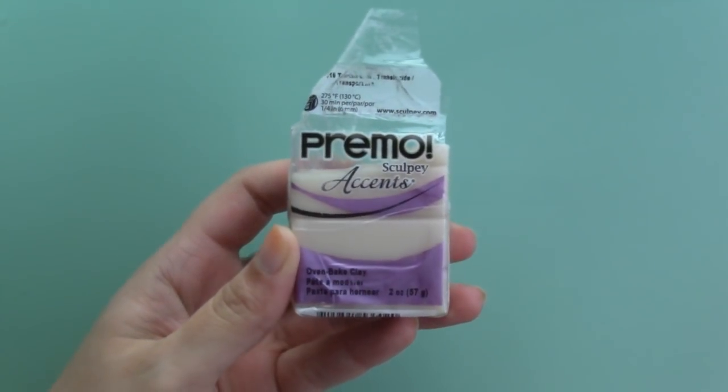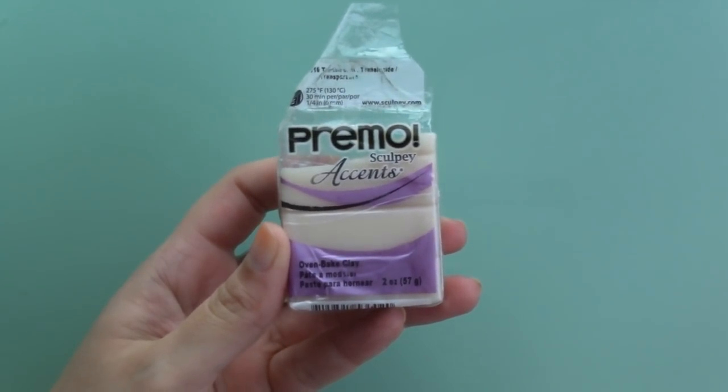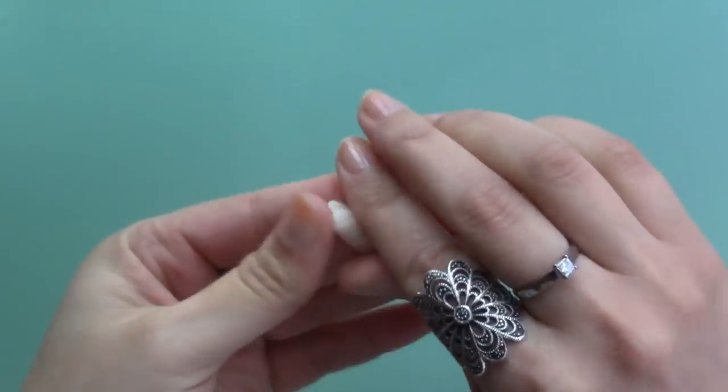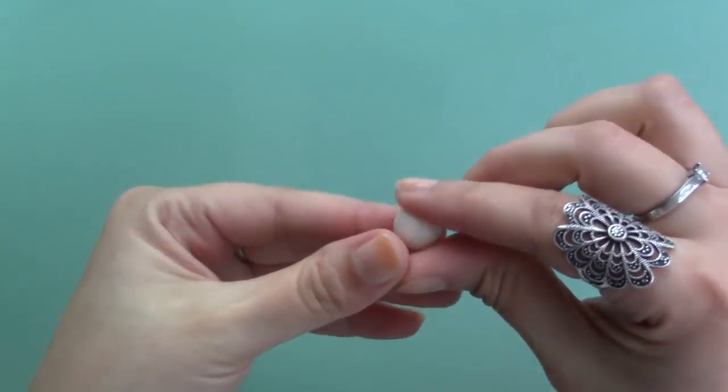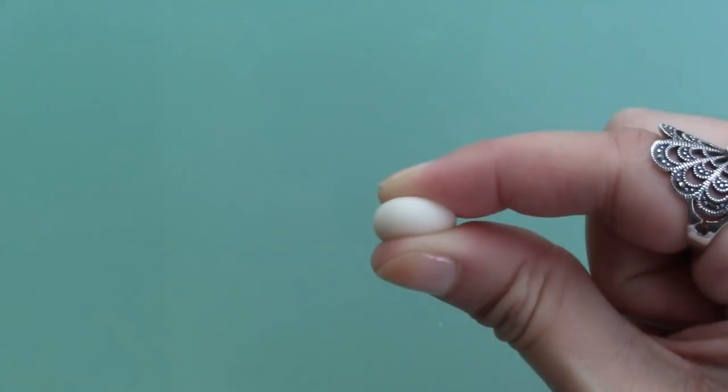To make the octopus I used translucent polymer clay, and I used Primo by Sculpey but you can use any brand you want. You want to condition the clay really well, and this is not just so it's pliable and easier to work with, but this will also help the clay bake better as well.